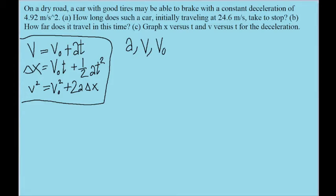Now part A of the problem asks about how long it takes. So this means that part A is asking about time. So I'm going to choose this first equation, V equals V-naught plus AT, since that includes all three of our unknowns and also has t, the time variable, which is what we want to find.